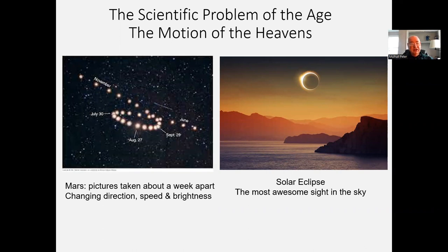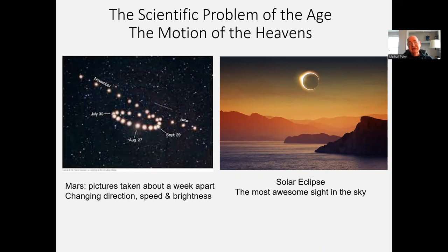Astronomy is arguably the oldest science. We want to do two things in this morning's lecture. First, to explain the problem of the age. If we were all farmers 100, 1,000, or 4,000 years ago, what the sky looks like at night — sitting on your lawn chair watching the sky — would be common knowledge that every child of ten would know. The second half: how did Ptolemy solve the problem of the age and build a model to explain what we see?